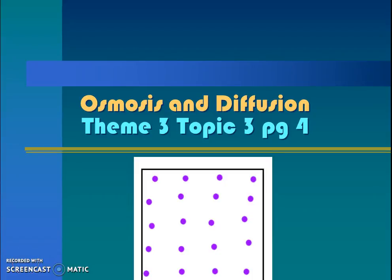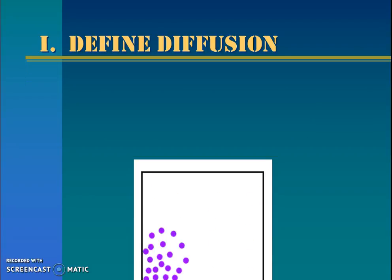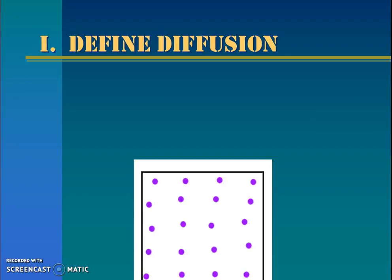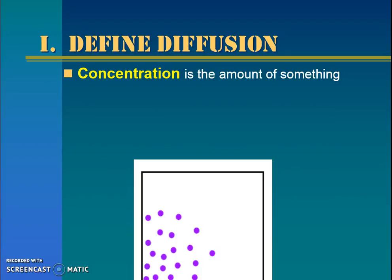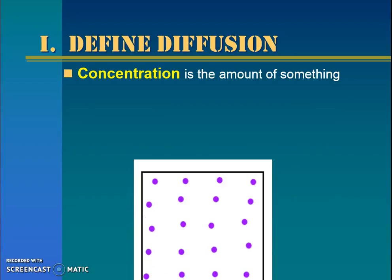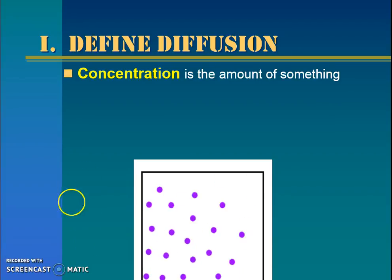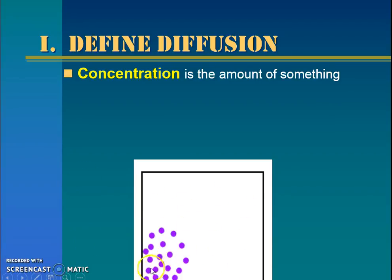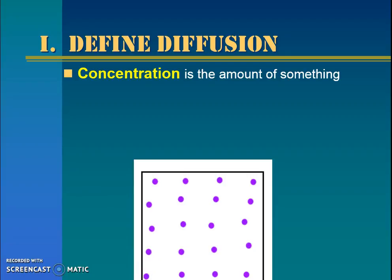Hello biology students! Let's talk about movement of molecules. Specifically we're going to talk about mostly osmosis and diffusion. So before we jump into diffusion, let's define concentration. Concentration is the amount of stuff in an area.